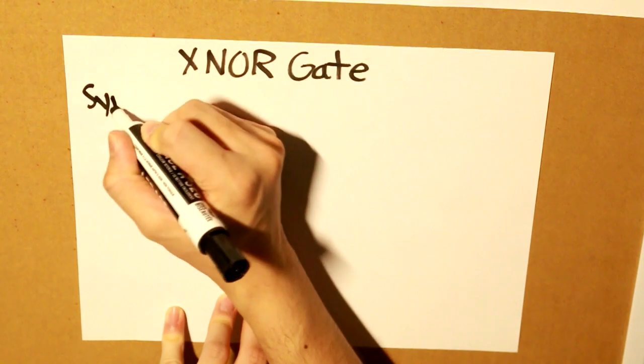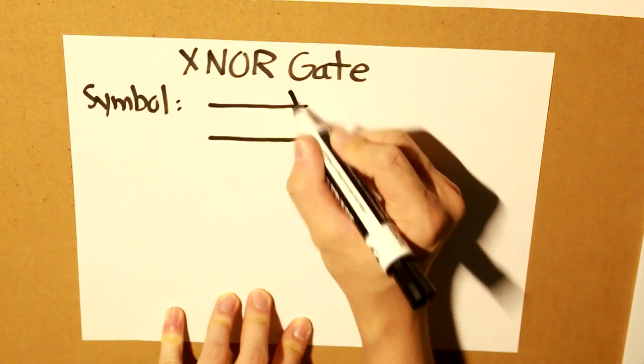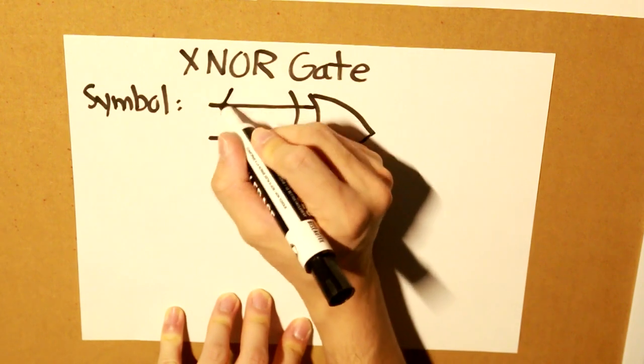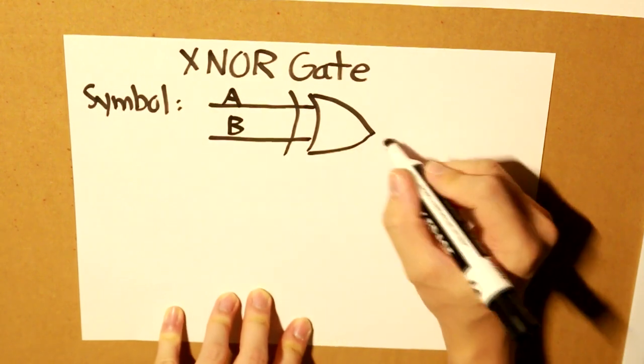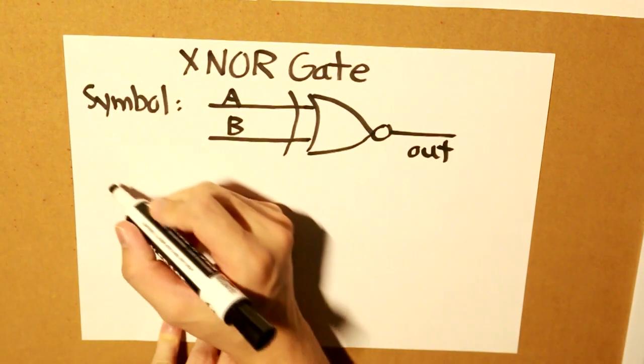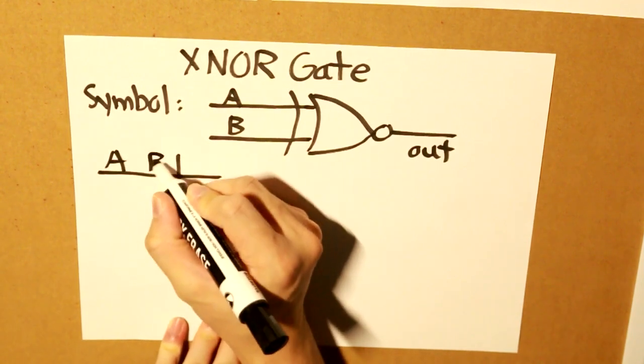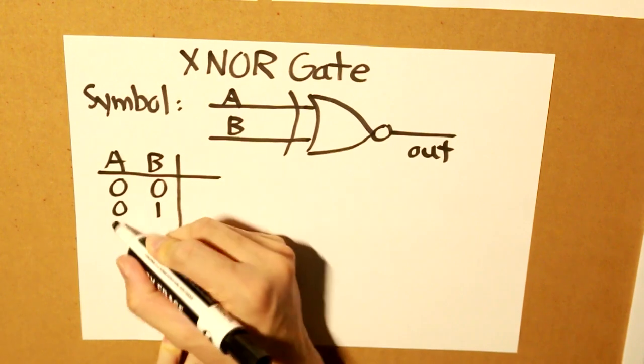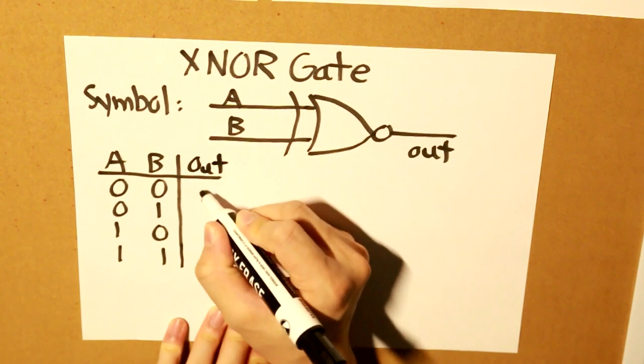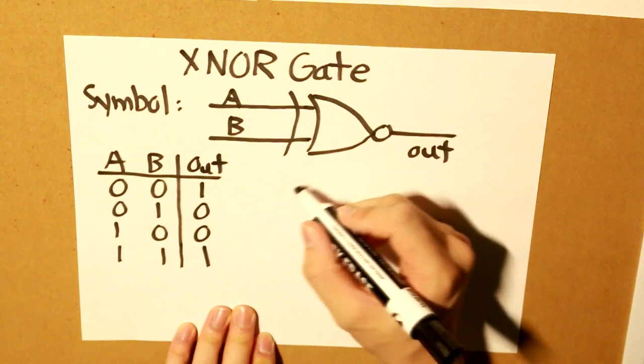The symbol for an XNOR gate looks like this. The truth table, if we take the two inputs A and B, looks like this: 1, 0, 0, 1. And the equation is the following.